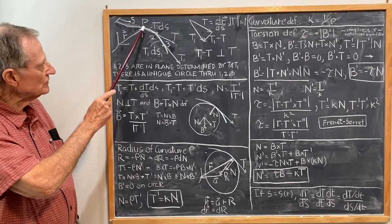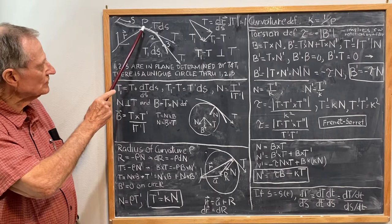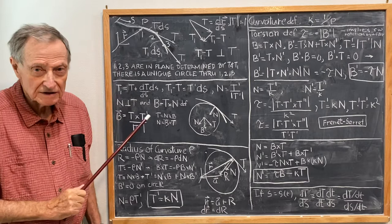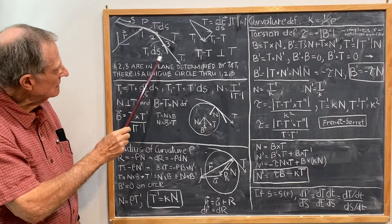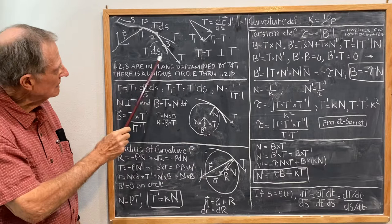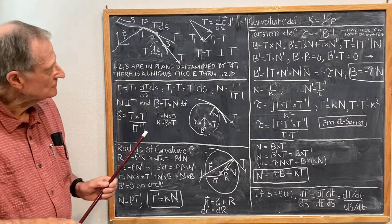The vector from 1 to 2 is the tangent at P times dS approximately, and it gets more accurate as you get smaller for dS. And the vector from point 2 to 3 is T1 dS1, where T1 is the tangent at point 2. So that locates our three points with respect to the original point P.